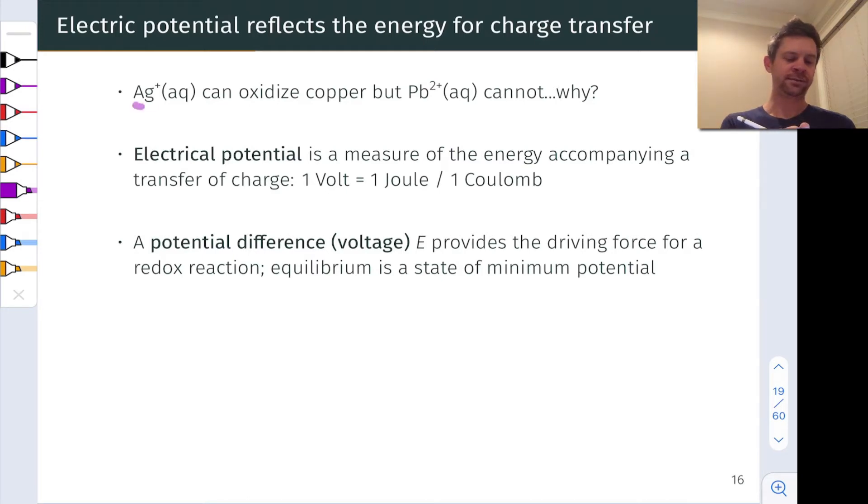Ag+ has sufficient oxidizing power to oxidize copper to copper 2+, but Pb2+ does not. Rather than getting into the structural reasons why this is the case, we can begin thinking about things like electronegativity and go down a pretty deep rabbit hole. For the time being we just want to quantify this, and one way to quantify it is to get some kind of a standard measure of the electrical potential of a half cell.